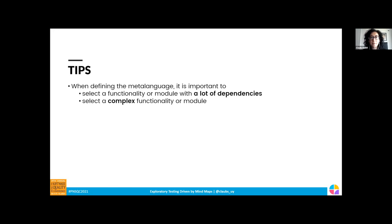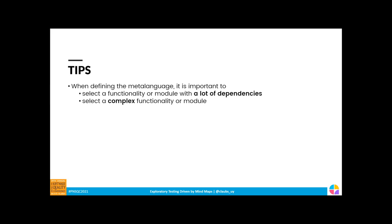It's also important to select a complex functionality or module. I suggest this because it will help identify concepts and general variables that are important for your context and that you want to apply in all your mind maps. For example, the green and red symbol to represent when the user is signed in or not was relevant to have the same nomenclature through the different mind maps — as was the blue 'from' label to represent from where the functionality being tested can be triggered. Selecting a complex functionality will help you identify those things that are preconditions or context that you want to consider across the different features or modules in your system.